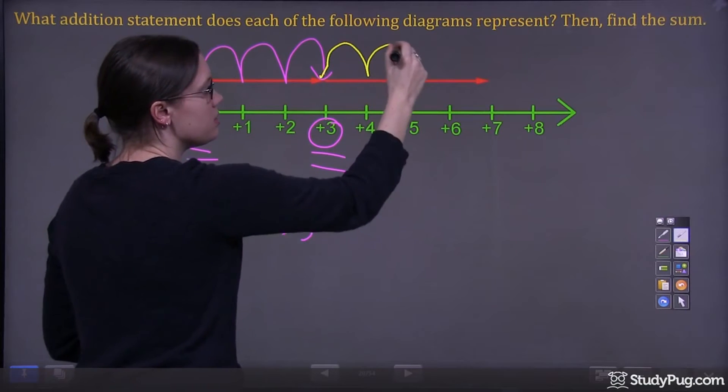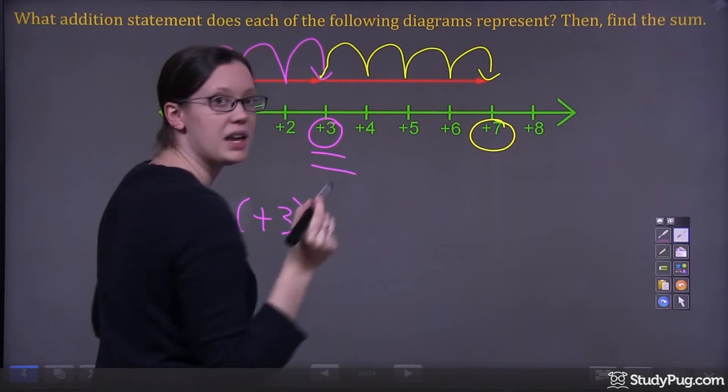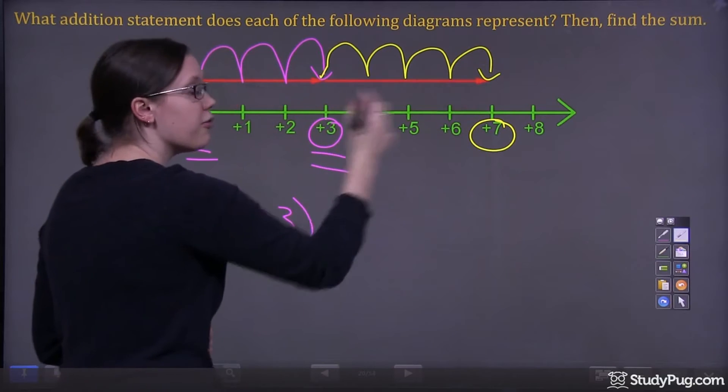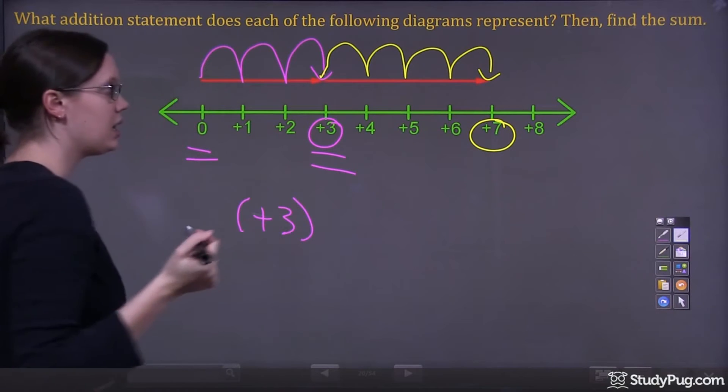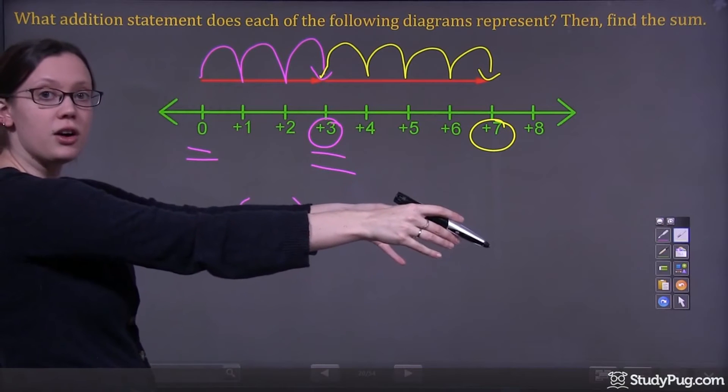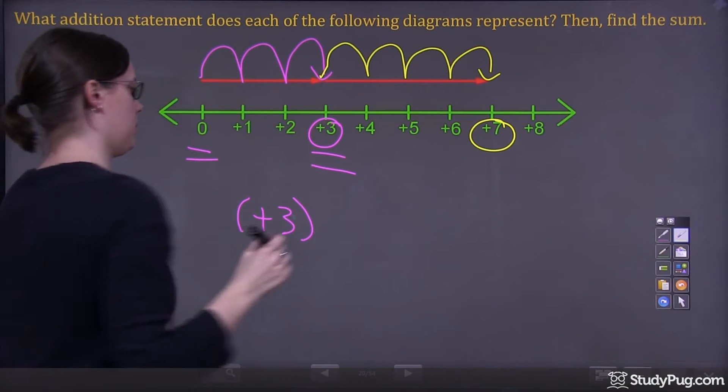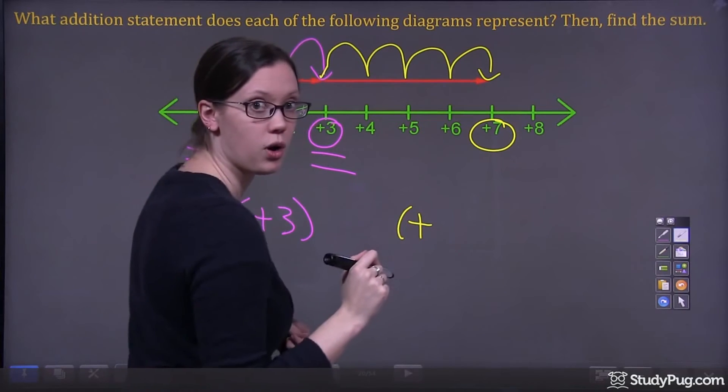1, 2, 3, 4. It ends at 7 and it goes up 4 spaces in the number line. And it goes to the right. If you go to the right, you get bigger and that's positive. So this is a positive as well. Positive 4.